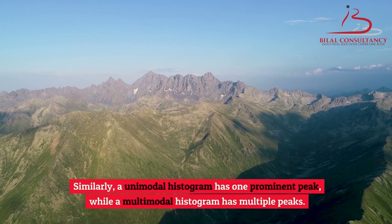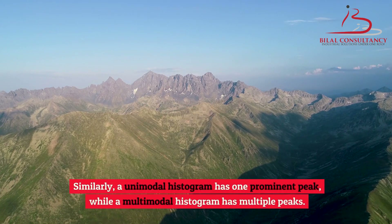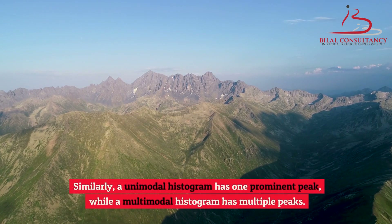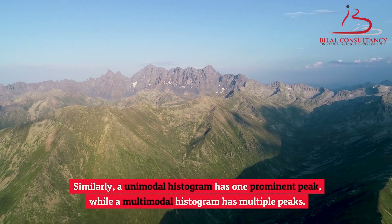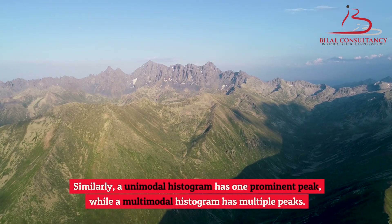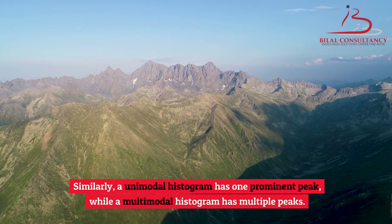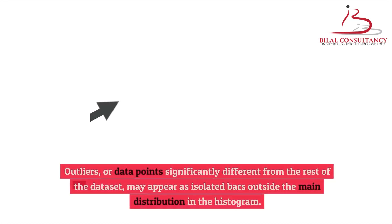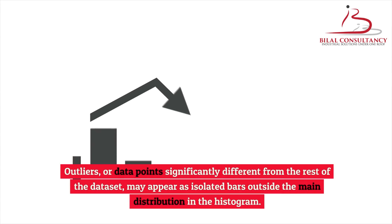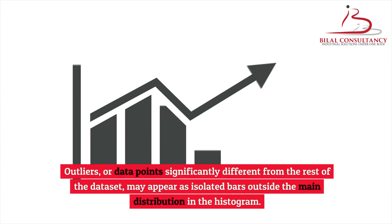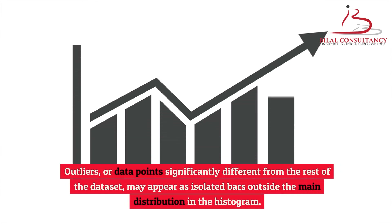Similarly, a unimodal histogram has one prominent peak, while a multimodal histogram has multiple peaks. Outliers, or data points significantly different from the rest of the dataset, may appear as isolated bars outside the main distribution in the histogram.